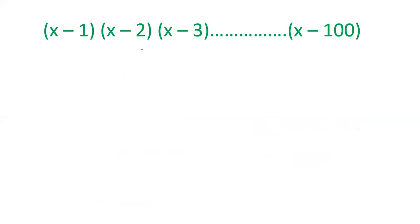the numbers are x minus 1, x minus 2, x minus 3. So first term will be x power 100 and second term will be x power 99 and its coefficient will be 1 plus 2 plus 3 up to 100.